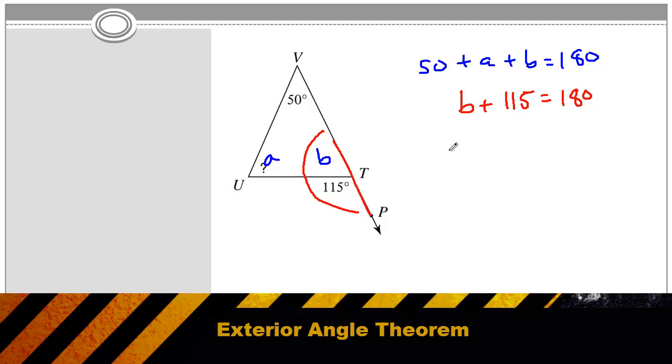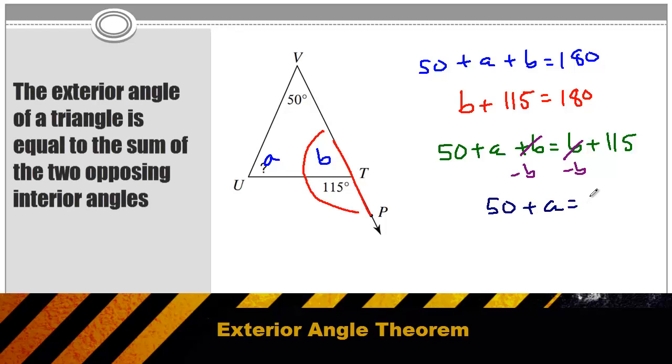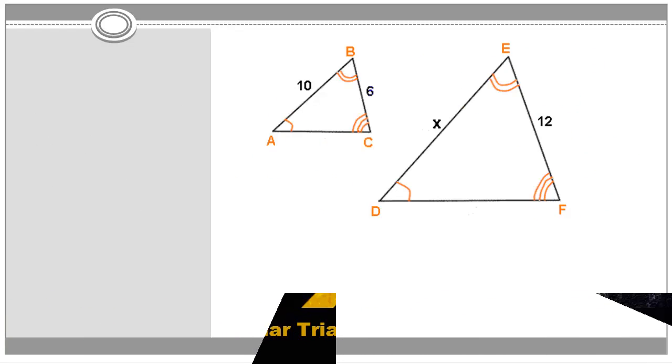Since both of my equations equal 180 degrees, I can actually set my two equations equal to each other. So I could write that 50 plus a plus b is equal to b plus 115. I can subtract b from both sides, and I'm left with 50 plus a is equal to 115. And that right there is the exterior angle theorem. The outside angle on any triangle will be equal to the sum of the two opposing interior angles. So what this theorem really does, it saves me about two or three steps, or about a minute on my exam.